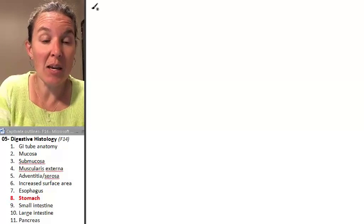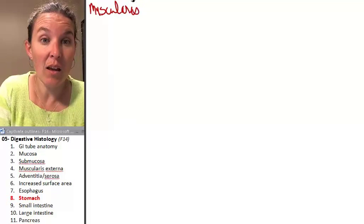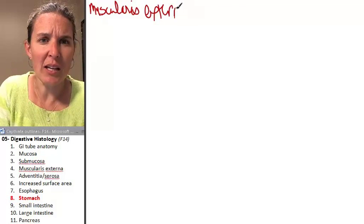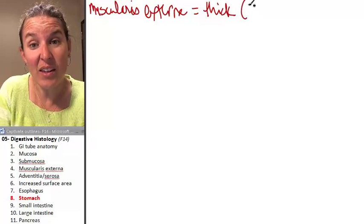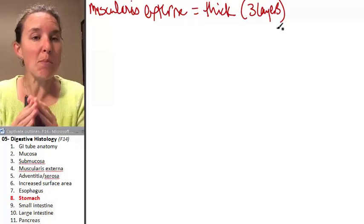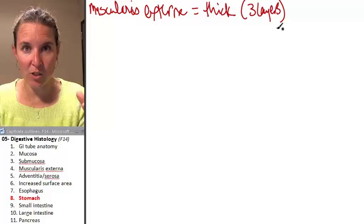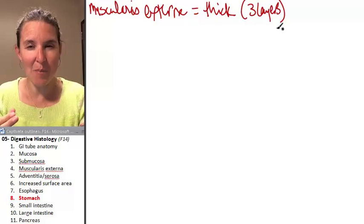Which means that the muscularis externa, I'm in stomach land, is thick. And it's so thick that instead of two layers, there are three. In most parts of the digestive tube, the muscularis externa has two layers, but the stomach has three.